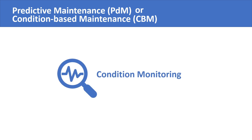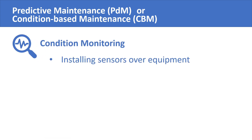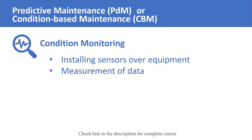So what is condition monitoring? In simple terms, condition monitoring refers to installing sensors and measuring devices over equipment to collect different types of data that are able to express some fault inside the machine. This data could be measurement of vibration, temperature, pressure, or any other operating parameter of the machine.